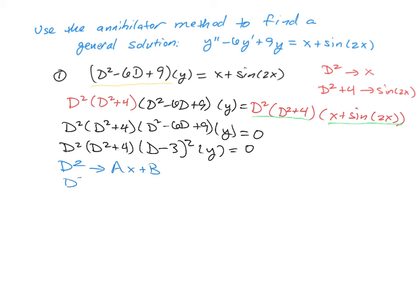The d squared plus 4, that's the annihilator for a cosine of 2x, sine of 2x.